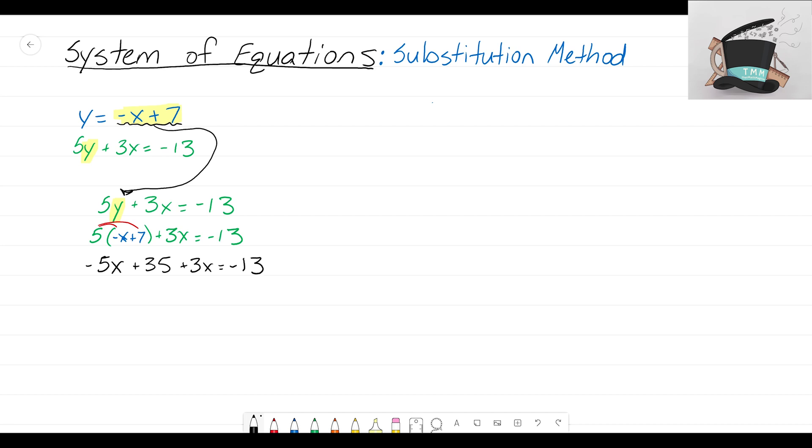We have 5 times plus 7, that turns into 35. Bring down the plus 3x, bring down the equals sign, still have negative 13. All I did was distribute that 5 to the terms inside the parenthesis. Now let's combine like terms. I see we have negative 5x plus 3x on the same side. Negative 5x plus 3x turns into negative 2x, plus 35 still equals negative 13.